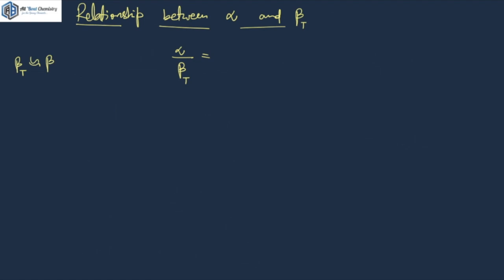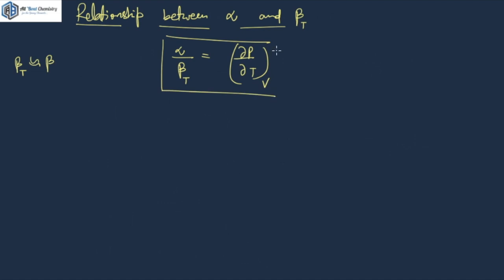Alpha upon beta T is actually equal to del P by del T at constant V. This is a very well-known equation; you should memorize it, because once a four-mark question was directly asked from this formula. I will explain how it is actually being derived. Let's try to understand the derivation. We need to show this particular relation, so let's start the derivation.